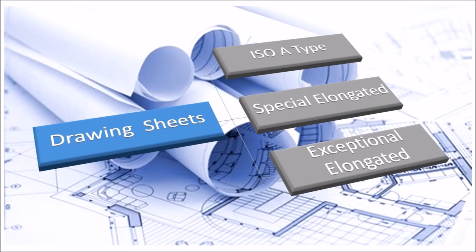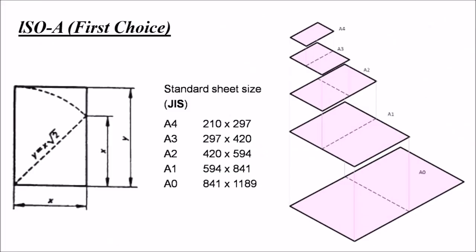The first choice of an engineer is obviously ISO A type sheet which are A4, A3, A2, A1 and A0. The length to width ratio of these sheets is 1 to root 2.